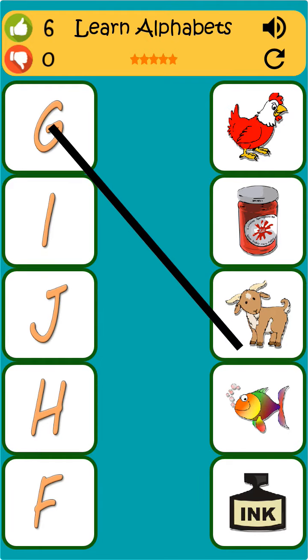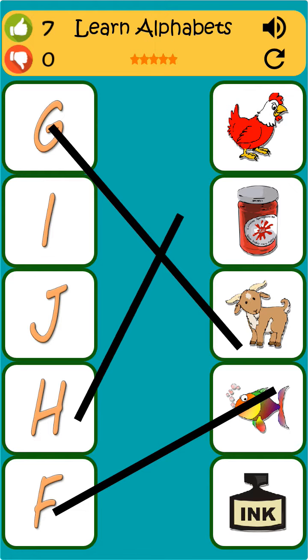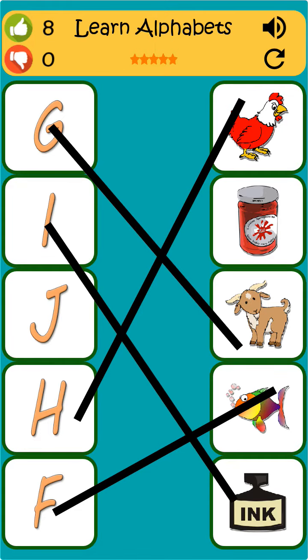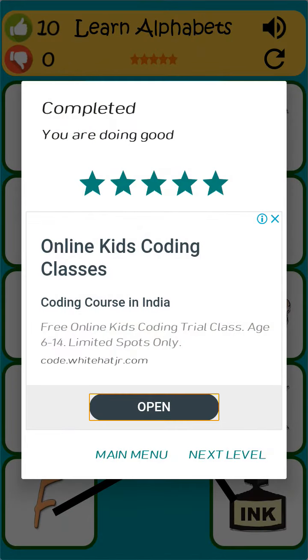G is for goat. F is for fish. H is for hen. I is for ink. J is for jam.